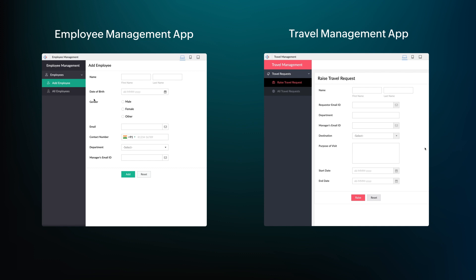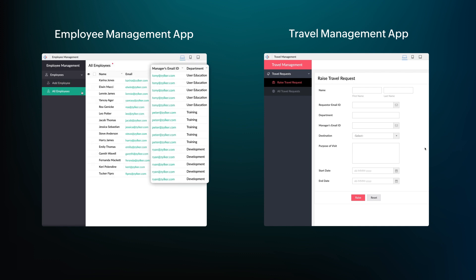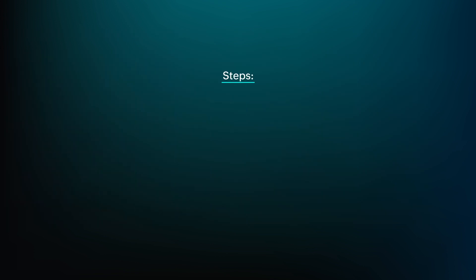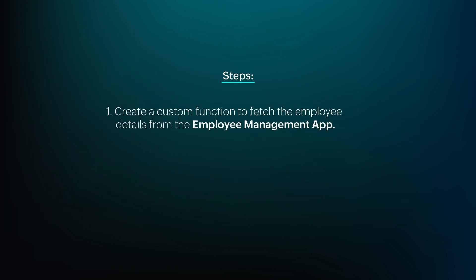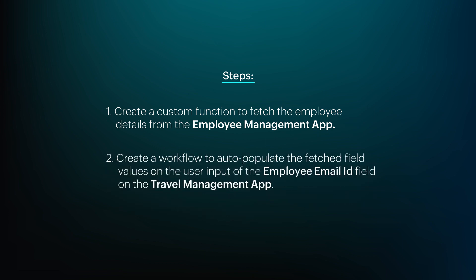Let's create workflows to fetch the employee's name, department, and the manager's email ID from the Employee Management app and auto-populate it on the Travel Management app when the employee enters their email ID. To achieve this requirement, we need to perform two simple steps: first, create a custom function to fetch the employee details from the Employee Management app, and second, create a workflow to auto-populate the fetched field values on the user input of the employee email ID field on the Travel Management app.